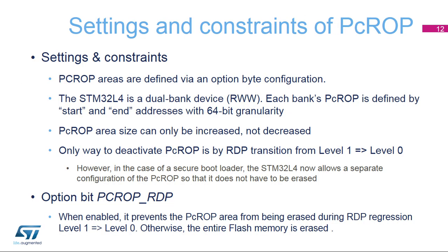The proprietary code readout protected areas in flash memory are defined through the option bytes. The PCROP feature is improved on the STM32L4 devices. Two separate PCROP areas can now be set independently, one per bank, each defined by a start and end address with a granularity of 64 bits. Note that once a PCROP area is configured, its size can only be increased. Once the PCROP areas have been defined, the only way to disable this protection feature is to change the RDP protection level from 1 to 0, which erases the entire flash memory. STM32L4 microcontrollers have a new feature that prevents the code in PCROP areas from being erased during the regression operation. By setting the PCROP RDP bit in the option bytes, the code in the PCROP areas will not be lost.